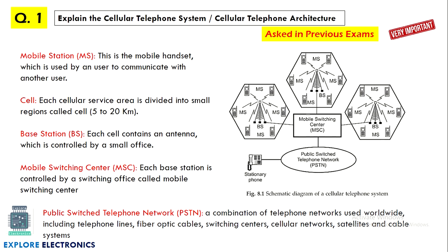The first important concept for exam is: explain the cellular telephone system. You can see this question in any wireless communication subject question paper — it is repeatedly asked in exams. The cellular telephone system is represented with a block diagram consisting of cells connected to MSC with base station, and then PSTN stationary phone. This needs to be explained by mentioning what is mobile station, cell, base station, MSC, and PSTN.